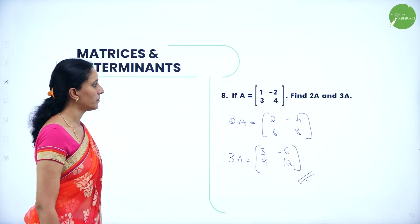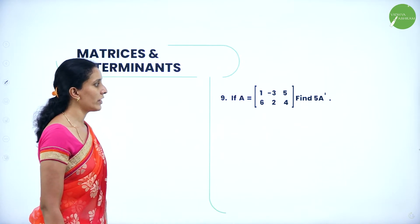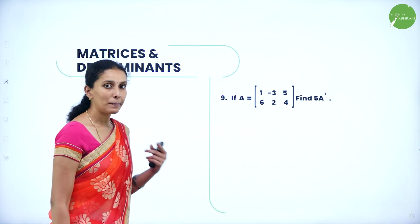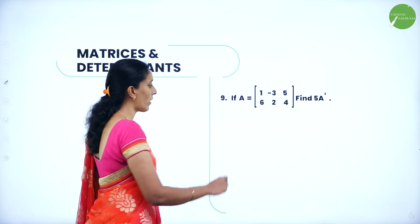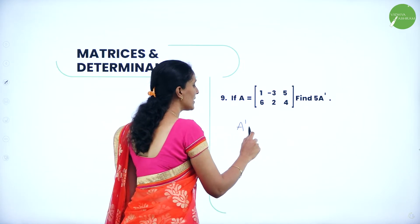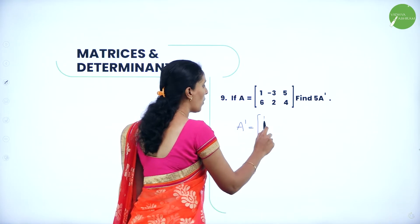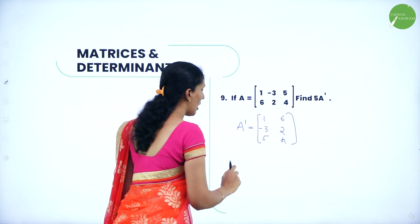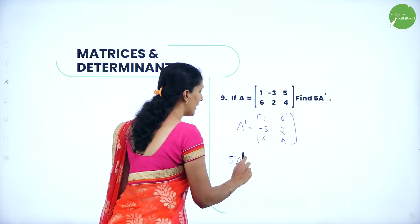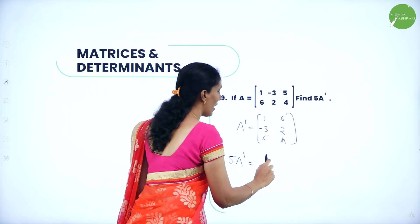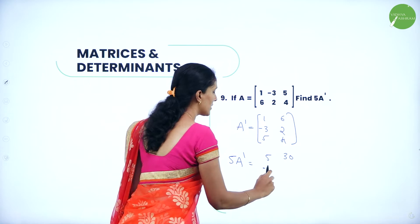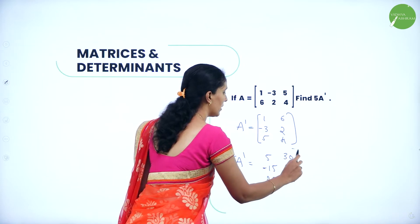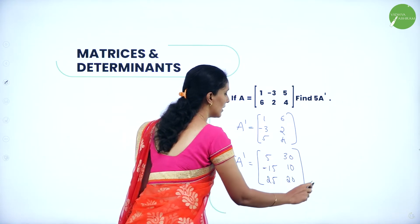Next question: if A = [1, -3, 5; 6, 2, 4], find 5A-dash. First find A-dash (transpose): rows become columns, so A' = [1, 6; -3, 2; 5, 4]. Now multiply by 5: 5A' = [5, 30; -15, 10; 25, 20]. This is the resultant matrix.